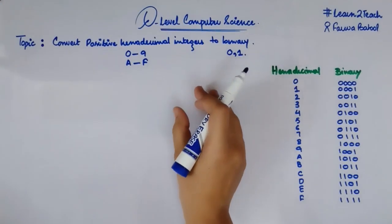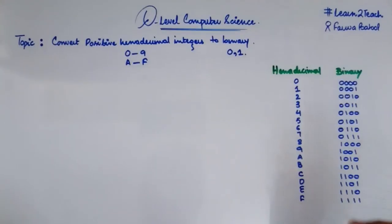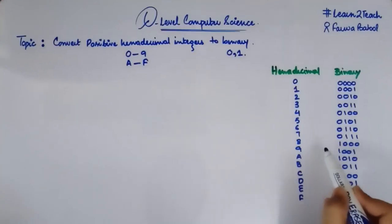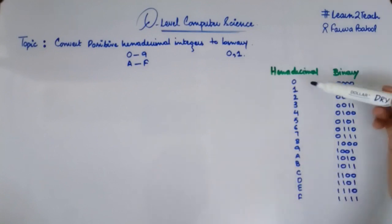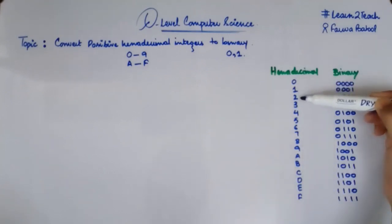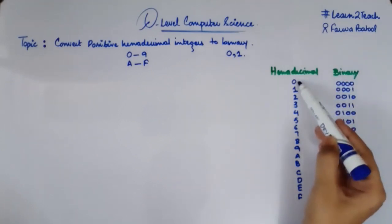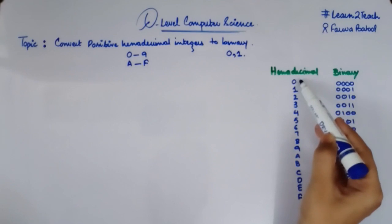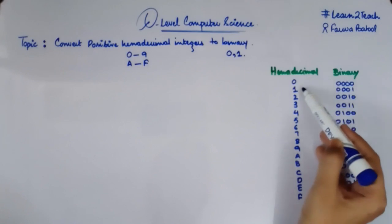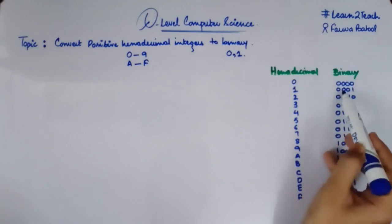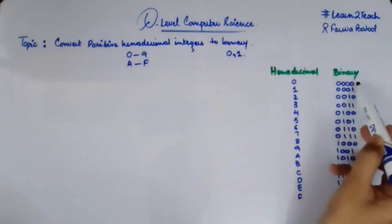It is very simple. What you need to do is memorize this conversion table. It tells you what each hexadecimal digit represents in binary. For example, 0 in hexadecimal is equal to 0000 in binary, and 1 in hexadecimal is equal to 0001 in binary.